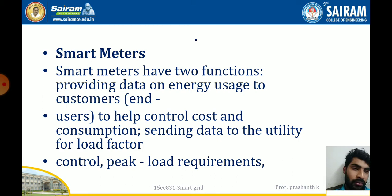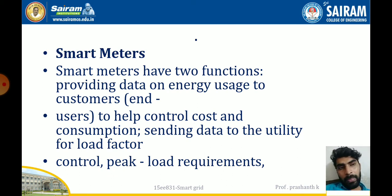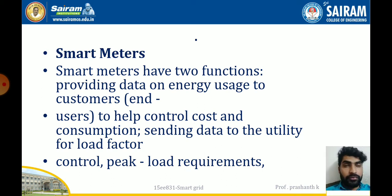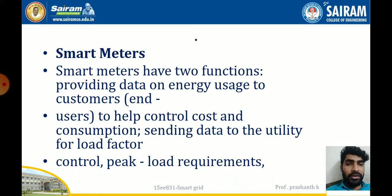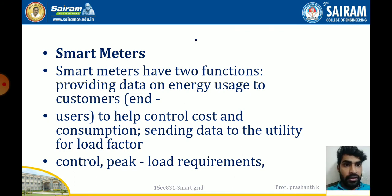Smart meters are used to determine how much each home appliance is consuming. At present, the electricity board uses smart meters to pay bills — entering the values of how much units are consumed and then issuing the bill. In the smart grid, there are no normal manual meters; it's automatic. Meters are placed in the home and monitored at power stations.